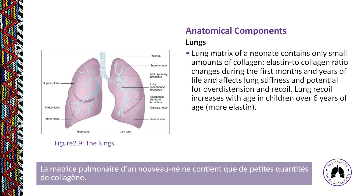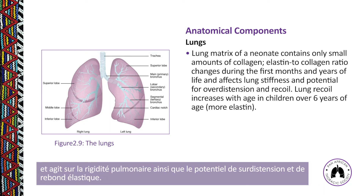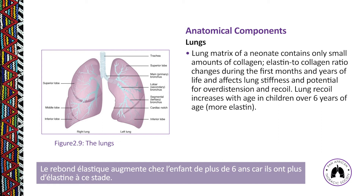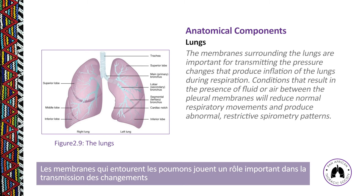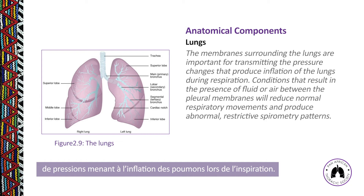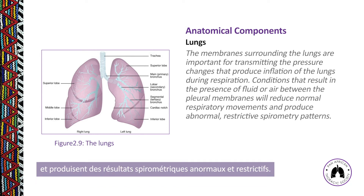The lung matrix of a neonate contains only small amounts of collagen. The elastin-to-collagen ratio changes during the first months and years of life, affecting lung stiffness and potential for over-distention and recoil. Lung recoil increases with age in children over six years because they have more elastin. Conditions that result in fluid or air between the pleural membranes will reduce normal respiratory movements and produce abnormal restrictive spirometry patterns.